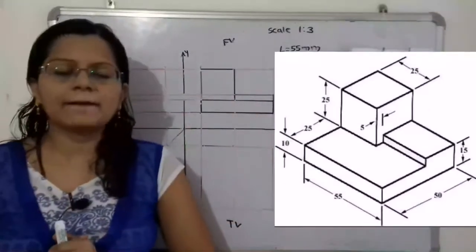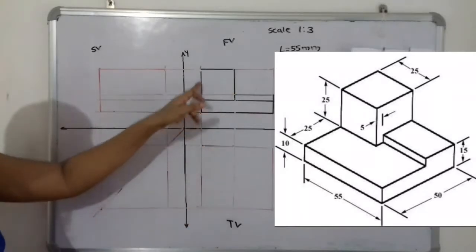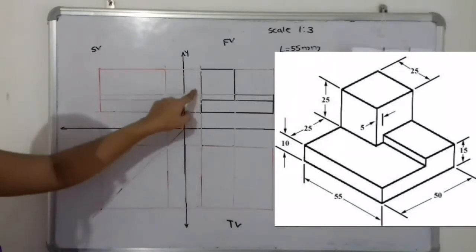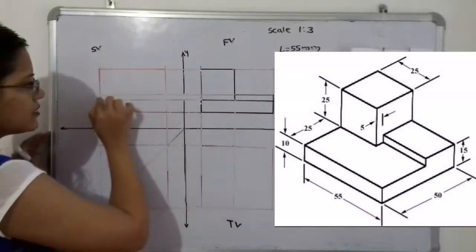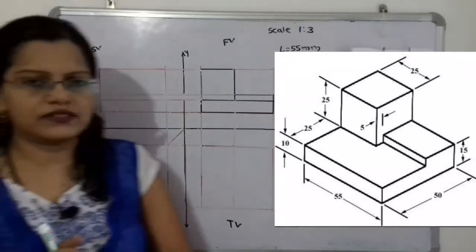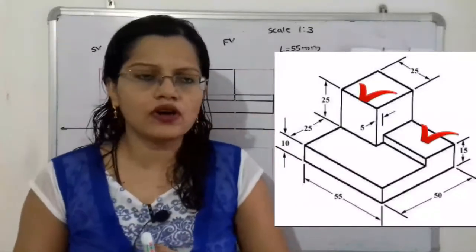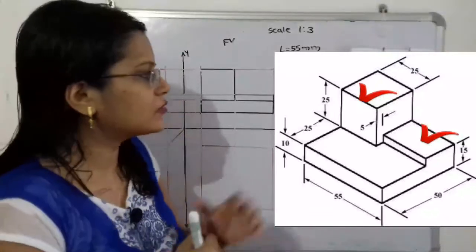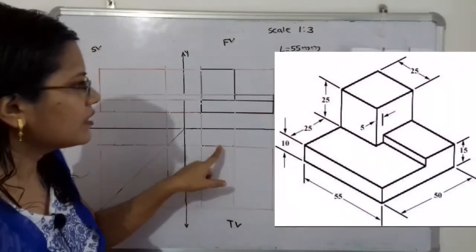The front view is now complete. We will move to the top view, but first we draw projection lines from the front view vertically downward to the top view. In the same way, we draw horizontal projection lines from the front view to the side view. From the top, we can clearly see the 25×25mm block, and also what the side block width is.